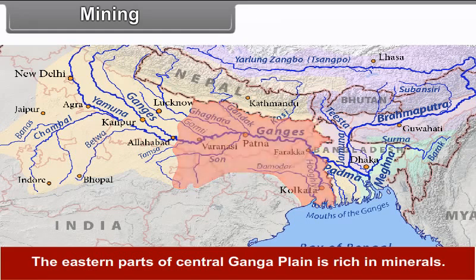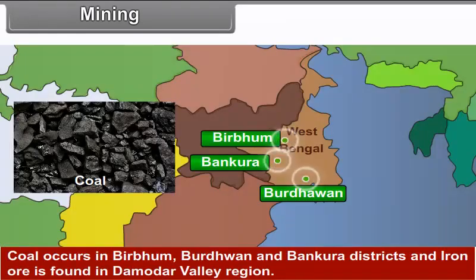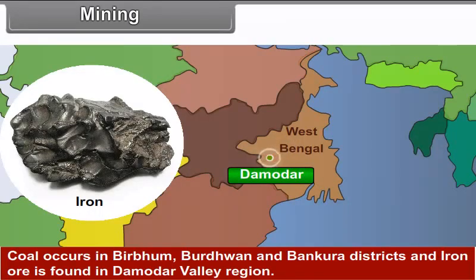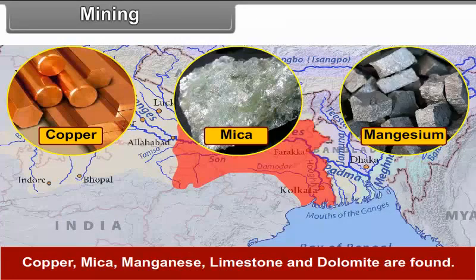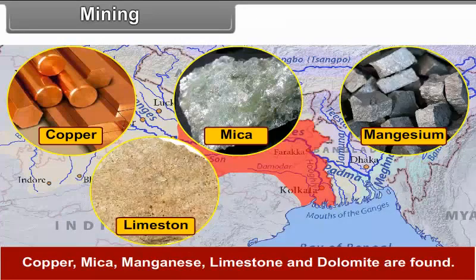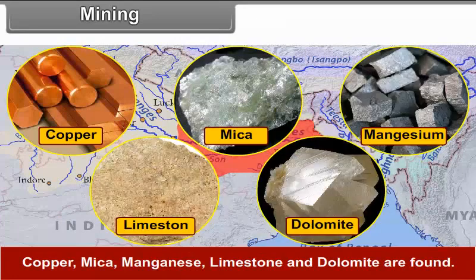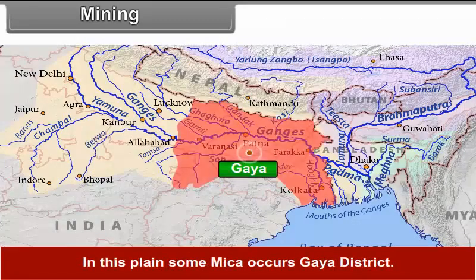Mining. The eastern part of the Central Ganga Plain is rich in minerals. Coal occurs in Birbhum, Burdwan and Bankura districts, and iron ore is found in the Damodar Valley region. Copper, mica, manganese, limestone and dolomite are also found. Some mica occurs in Gaya district.